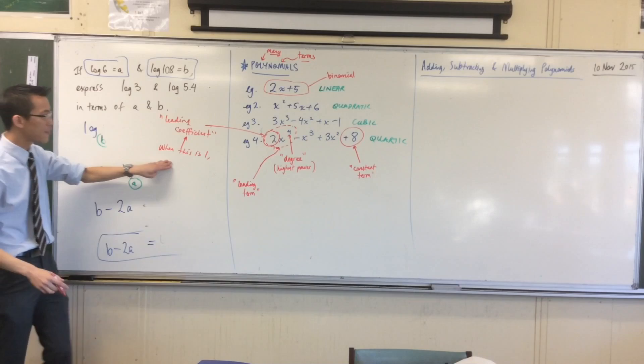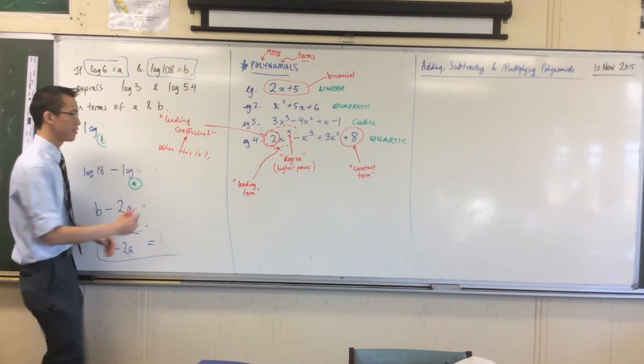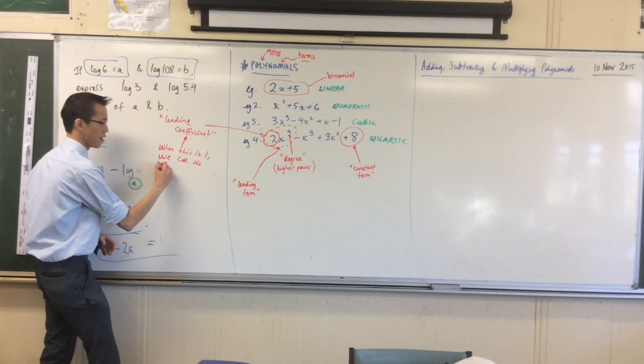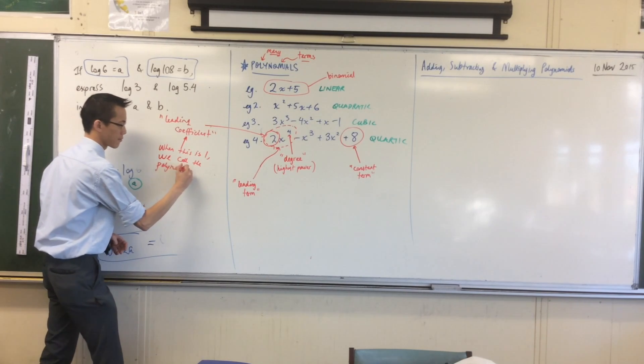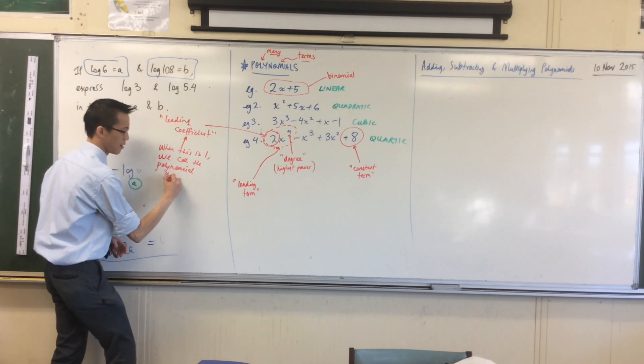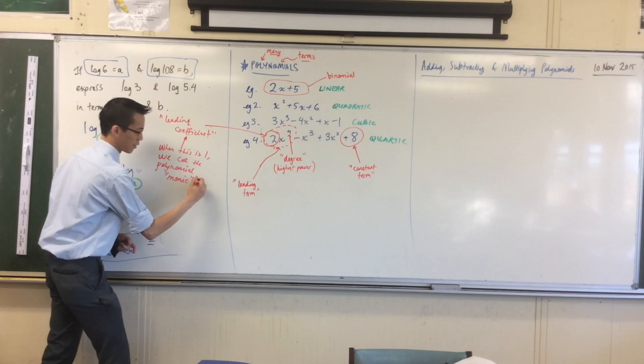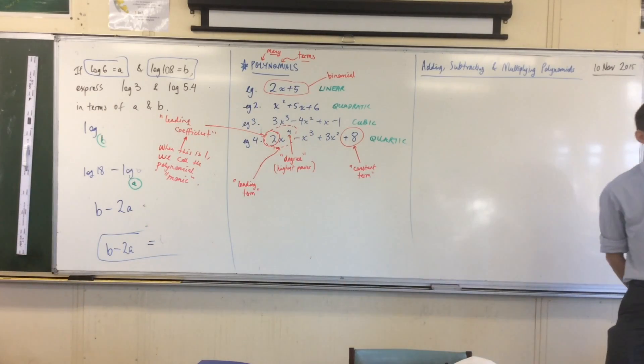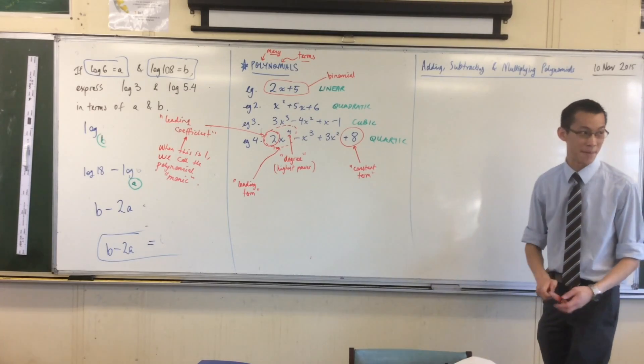But all of these polynomials, if they have a leading coefficient of 1, we call the polynomial monic, a monic polynomial, which comes from like mono, from monorail and so on. So monic polynomials come up again and again, which is why when you see something frequently, you give it a special name.